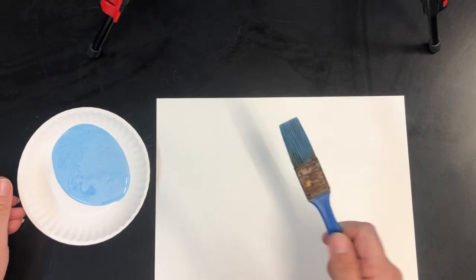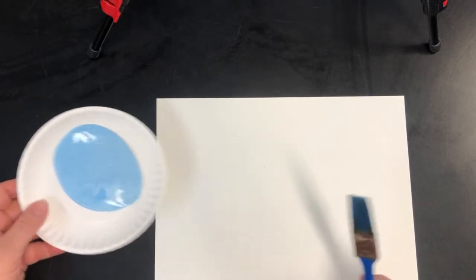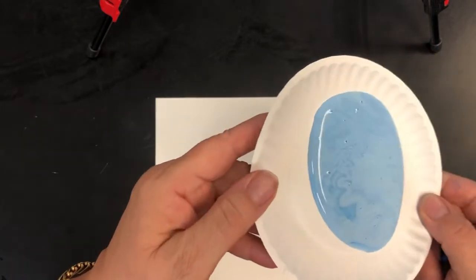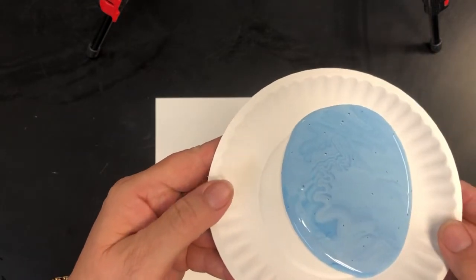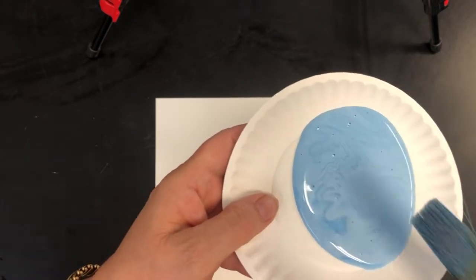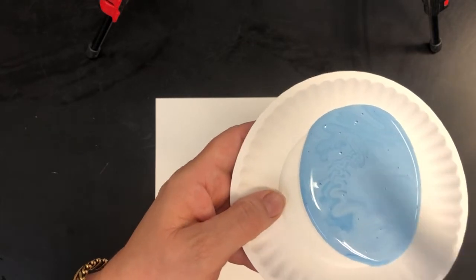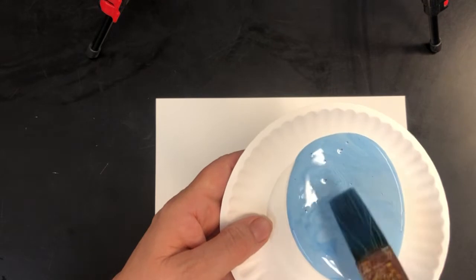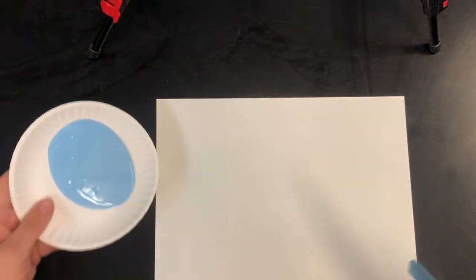Alright, so you're gonna get a brush, a big brush like this. You're gonna get some paint and you may notice that the paint is not totally mixed. That is perfectly fine. I took some white, I added some blue, and I didn't mix it all the way. And I don't want you to mix it. Use it just like this because it'll look really cool in the background.